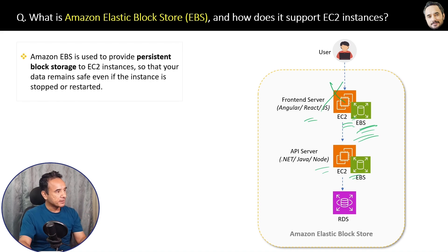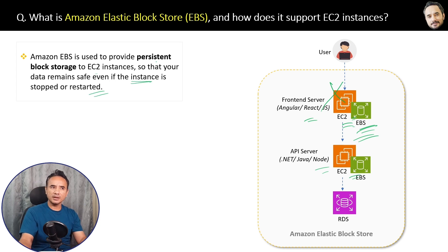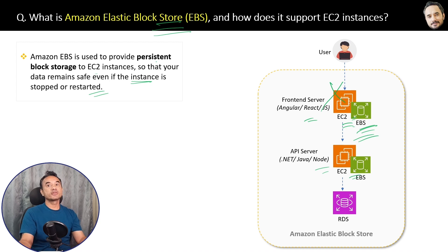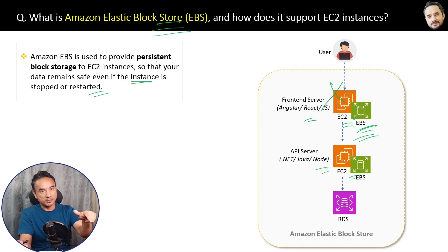You can think of EBS as an SSD or hard drive attached to your laptop or computer. Here is the final definition: Amazon EBS is used to provide persistent block storage to an EC2 instance so that your data remains safe even if the EC2 instance is stopped or restarted. You might ask: what is the meaning of block storage in EBS, and what is the difference between block storage and object storage? S3 is object storage; EBS is block storage — and I will explain that difference in the next question.